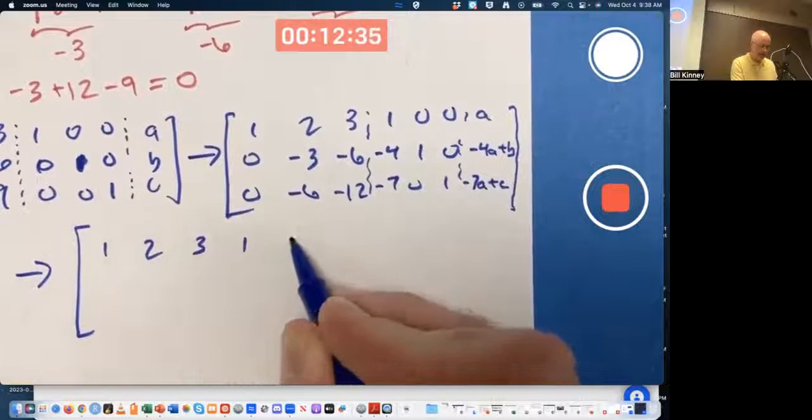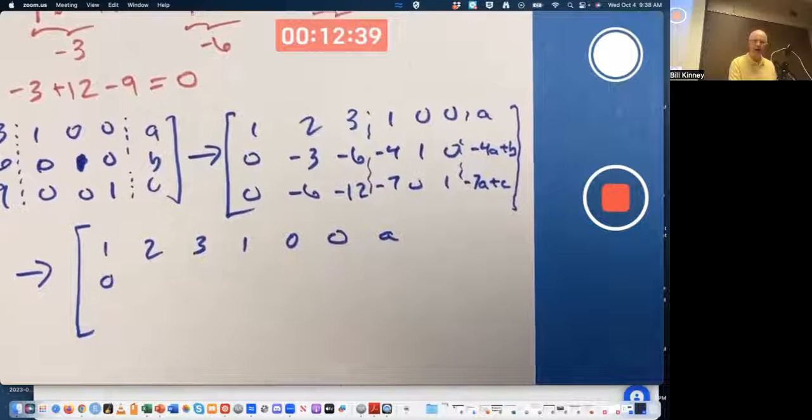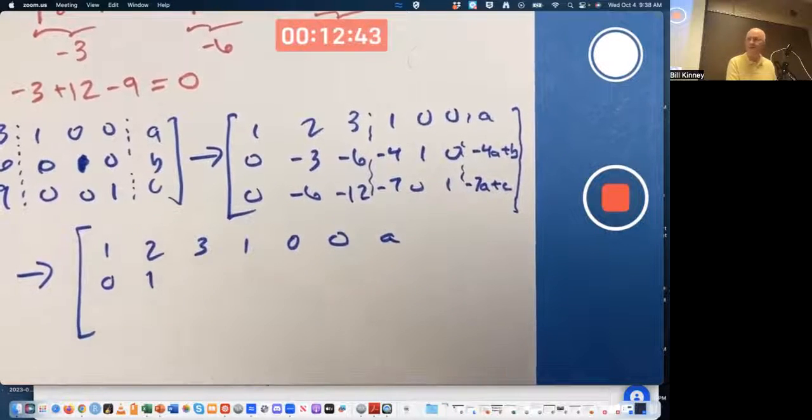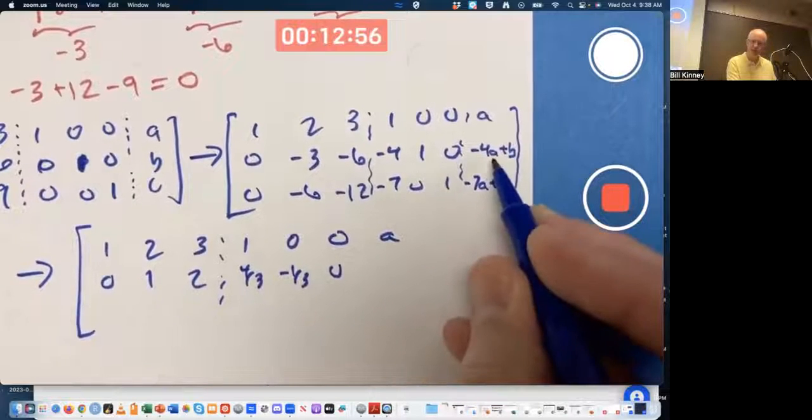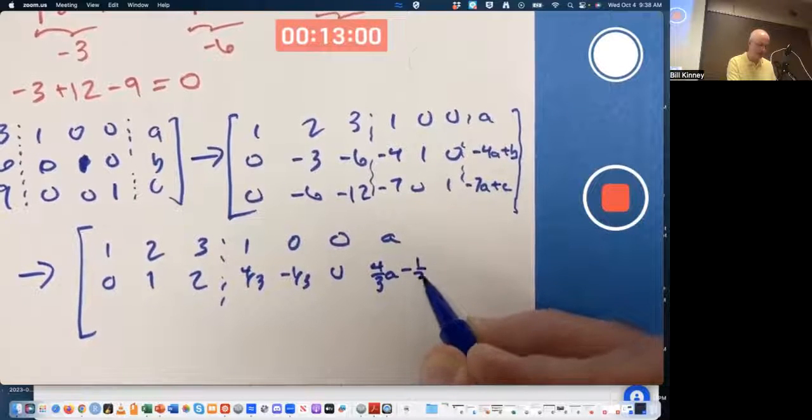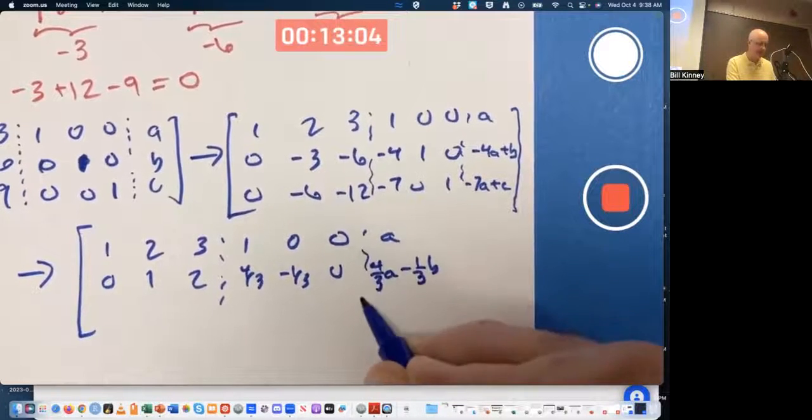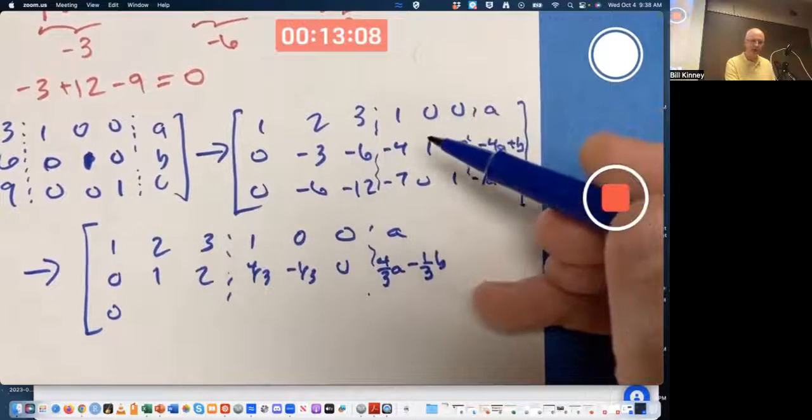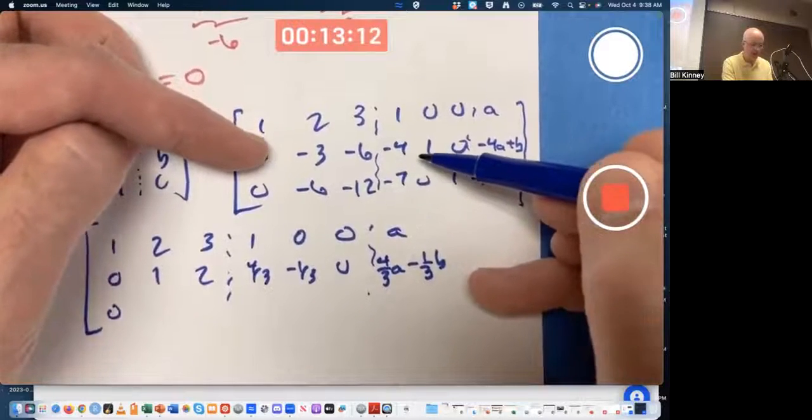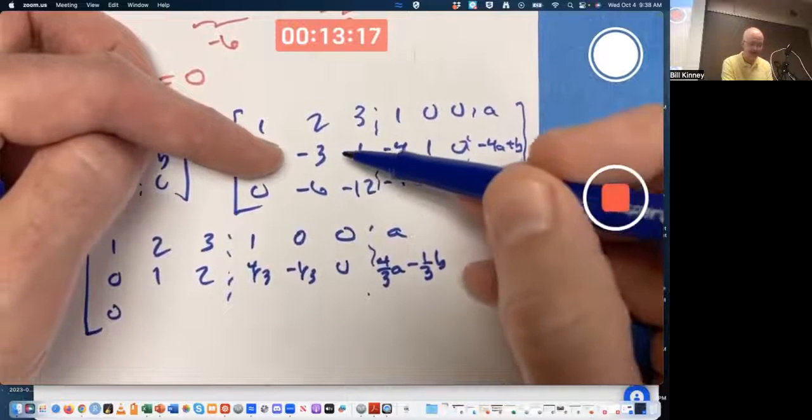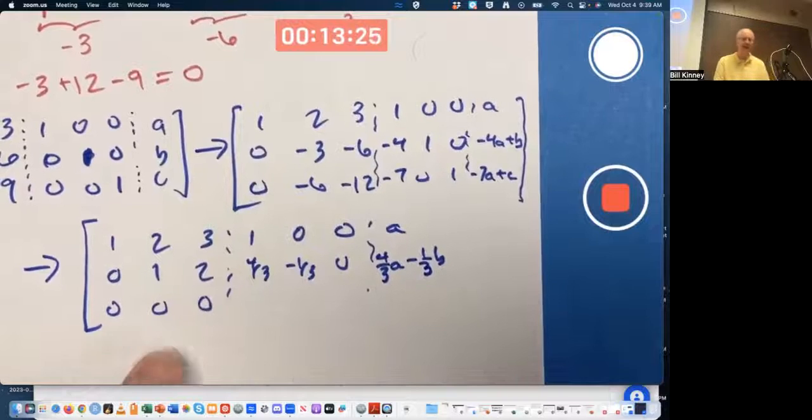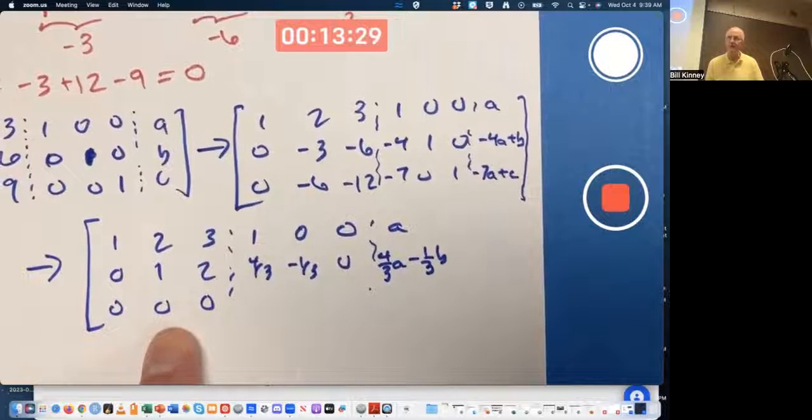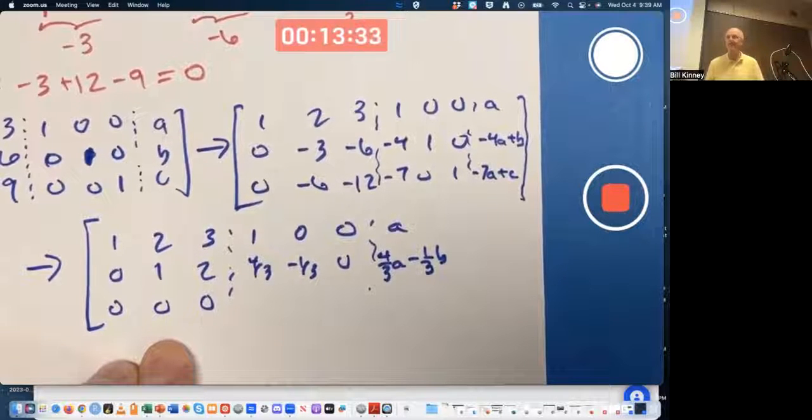I'll also multiply row one by negative seven and add it to row three to get a zero here. Negative seven times two is negative 14 plus eight is negative six. Negative seven times three is negative 21 plus nine is negative 12. Oh yeah. These two rows, if you ignore everything else, are now multiples of each other. You're going to get zeros here, here, and here in the next step.